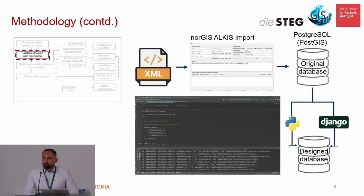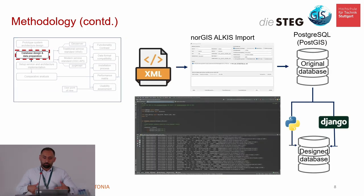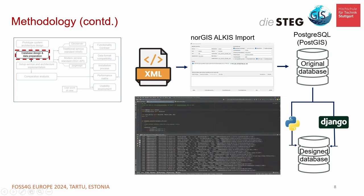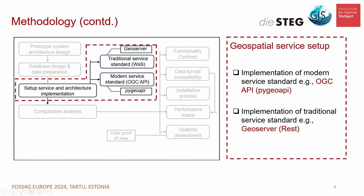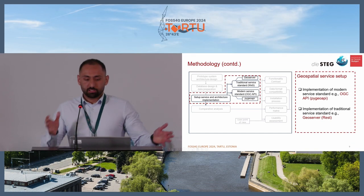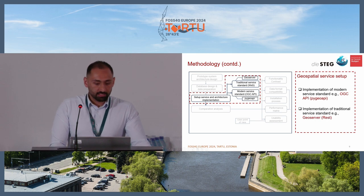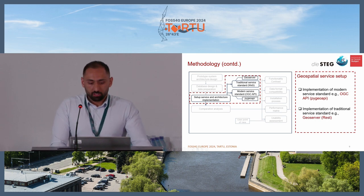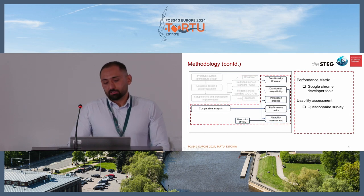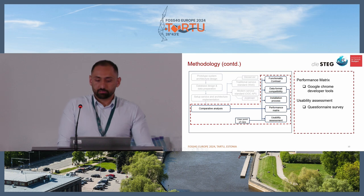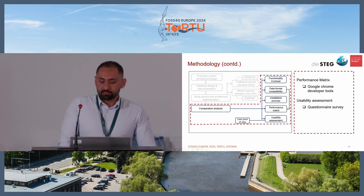We are using the NorGIS ALKIS import, which is open source software for importing XML data into our PostgreSQL database. At the end, we implement service architecture for GeoServer traditional service standards — WFS and WMS — and the modern service standard OGC API, PyGeoAPI. We will then compare functionality, data format, installation process, performance, and usability.